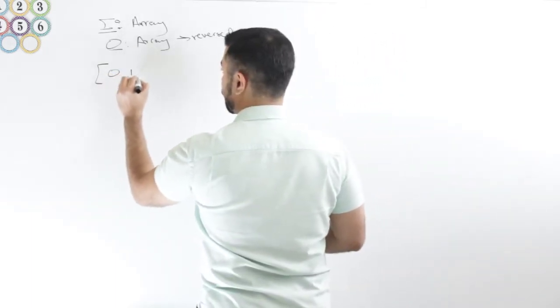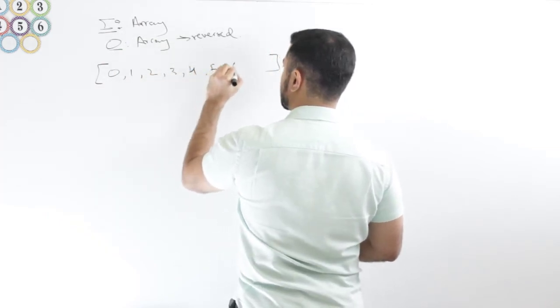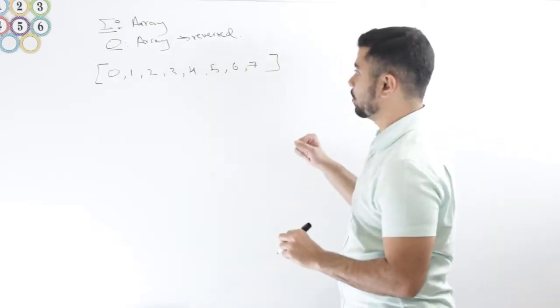So let's say I have 0, 1, 2, 3, 4, 5, 6, and 7. Let's say I have these elements.